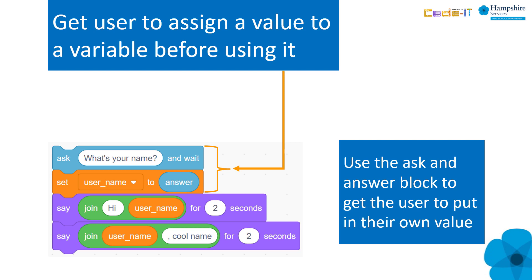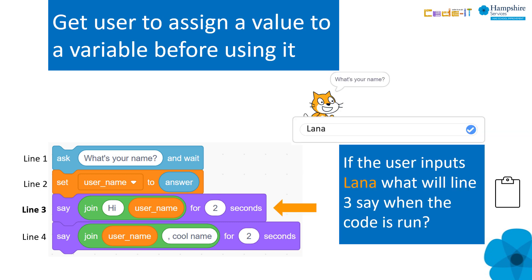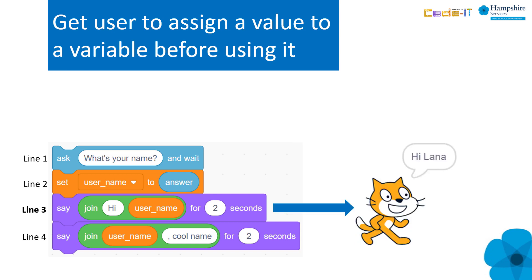Using an input block, we can get the user to assign their own value to a variable. In this case they are typing their own name, which will be assigned to 'username'. Testing pupils' understanding of what we've shared is important as well. The program reads the variable name but acts on the value, in this case 'Lana'.